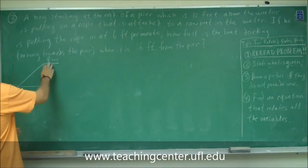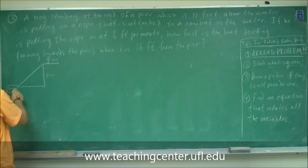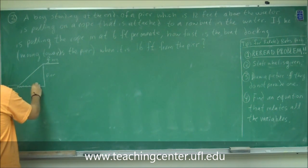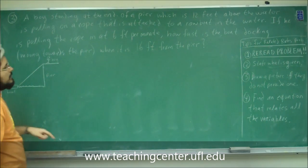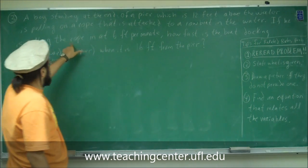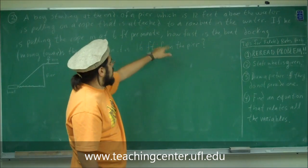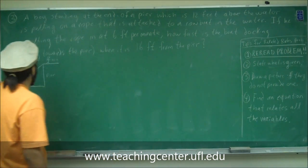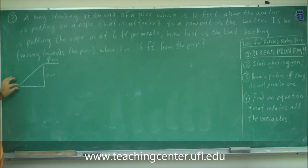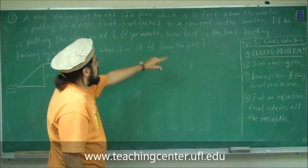So they give us a picture — here's the boy pulling on a rope attached to a boat, here's the water, and here's the pier. If he is pulling the rope in at 6 feet per minute, how fast is the boat docking — moving towards the pier — when it is 16 feet from the pier?